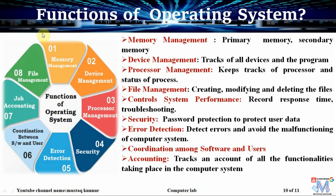Now coming to the functions of operating system. The operating system facilitates the following facilities. Number one is memory management — the OS is used for memory management of primary memory such as RAM, as well as secondary memory such as the hard disk. It is also used for device management — that is, to track the programs and functions of all devices connected to the computer. Similarly, to keep track of the processor and the status of processes, the operating system is needed — that is called process management. For creating, modifying, and deleting files, we need the operating system — that is called file management.